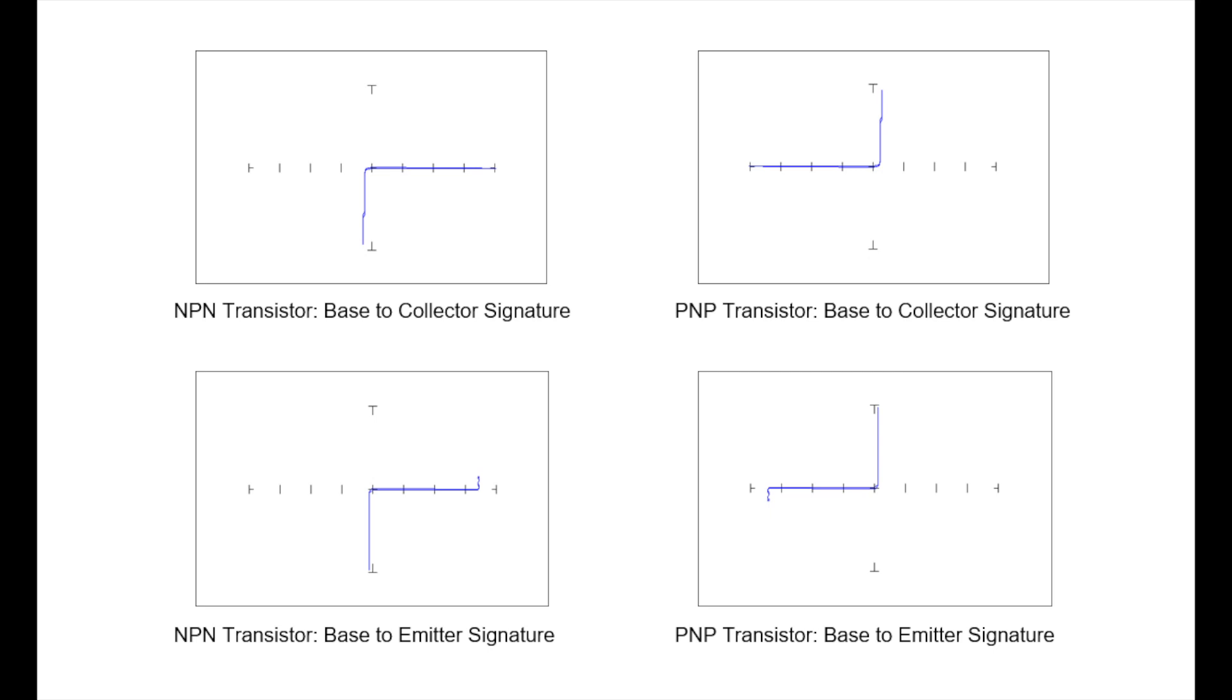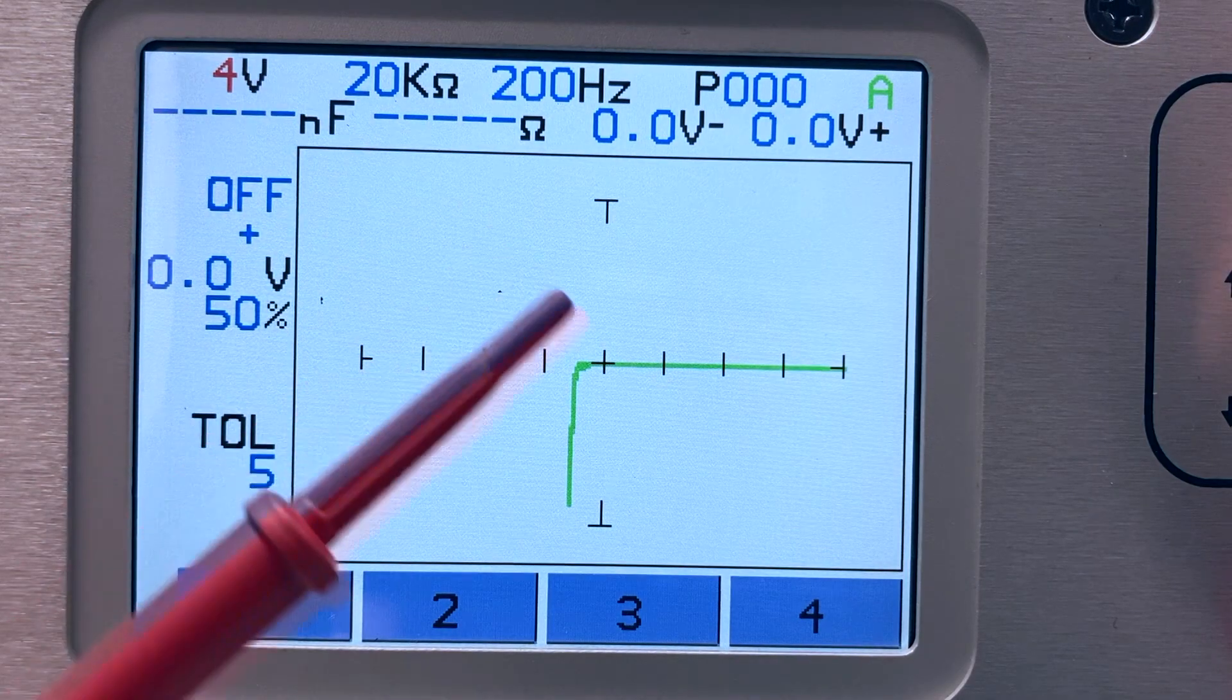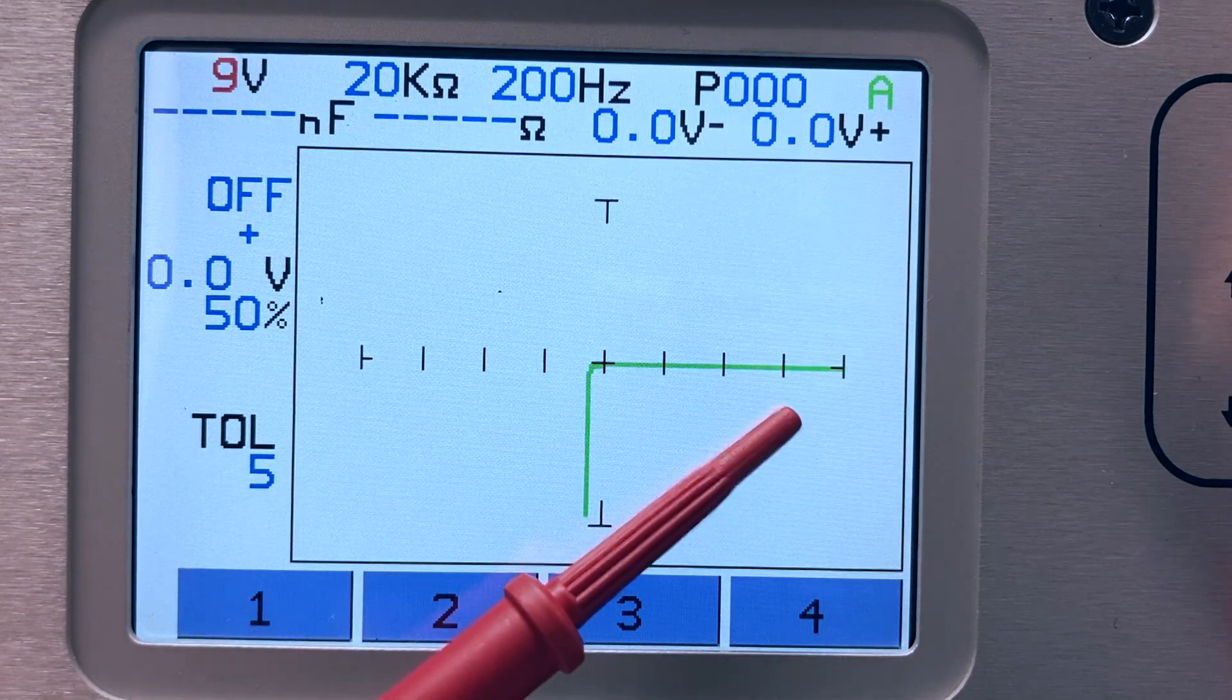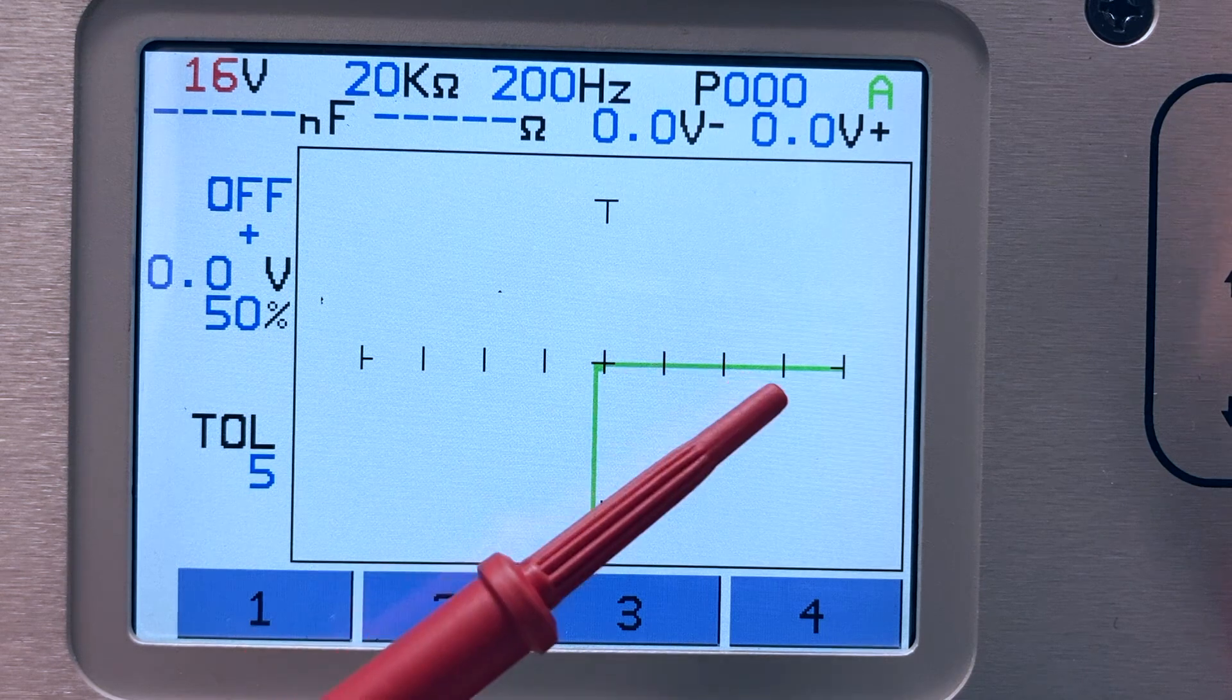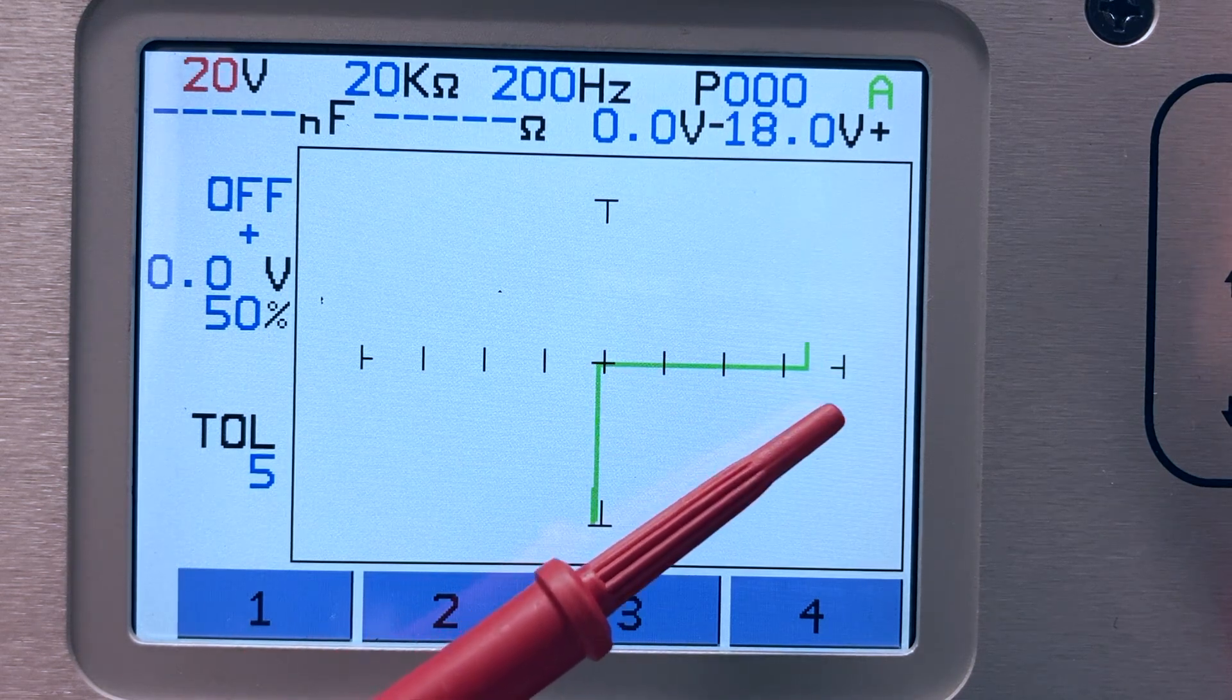Signatures from a PNP transistor will show signatures with reverse polarity, making them look upside down when compared to an NPN transistor. You may need to change your voltage setting to see the base emitter breakdown as you test various transistors, such as this power transistor, where the voltage is set to 20 volts.